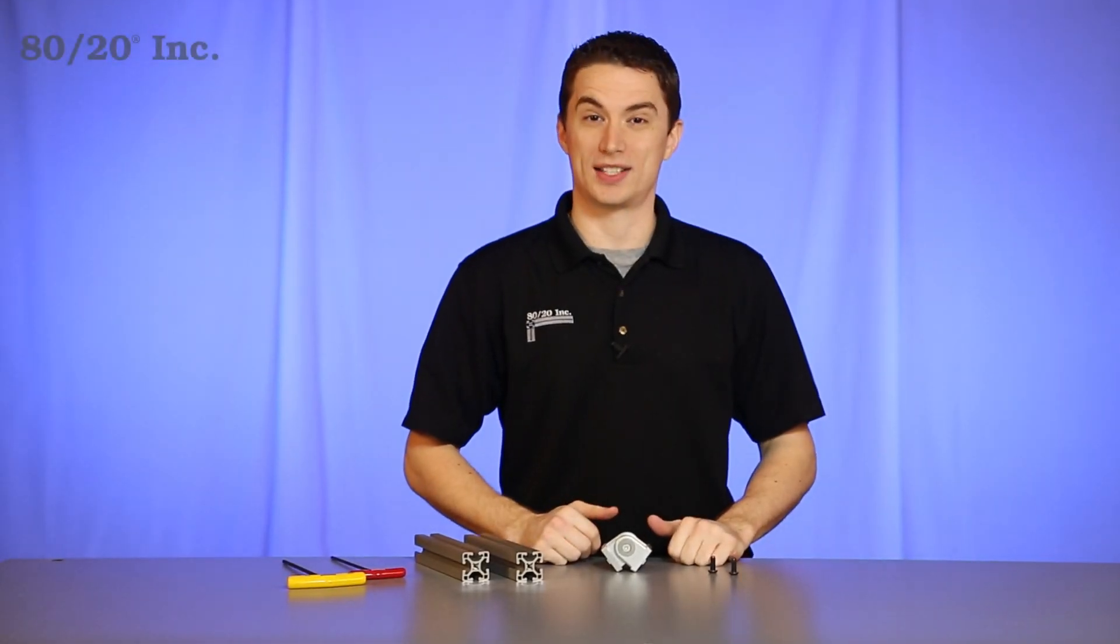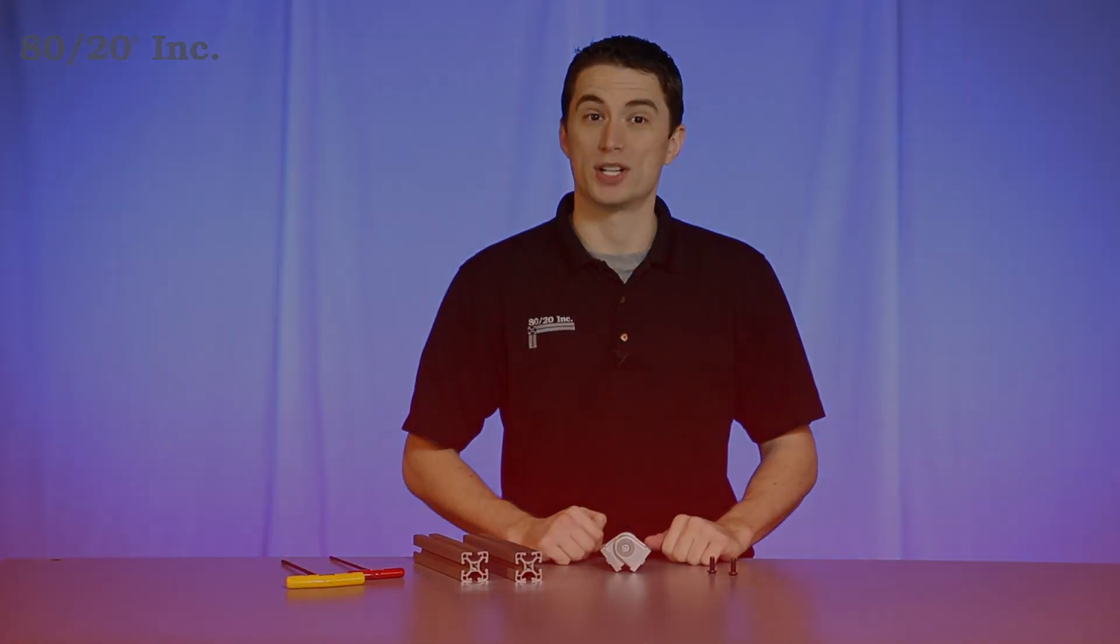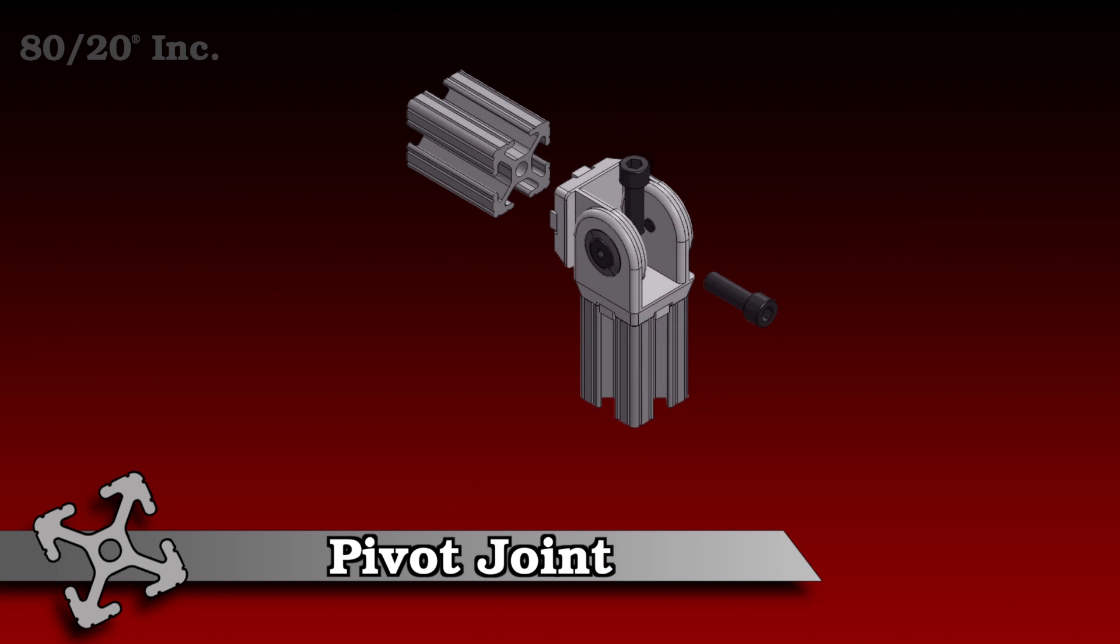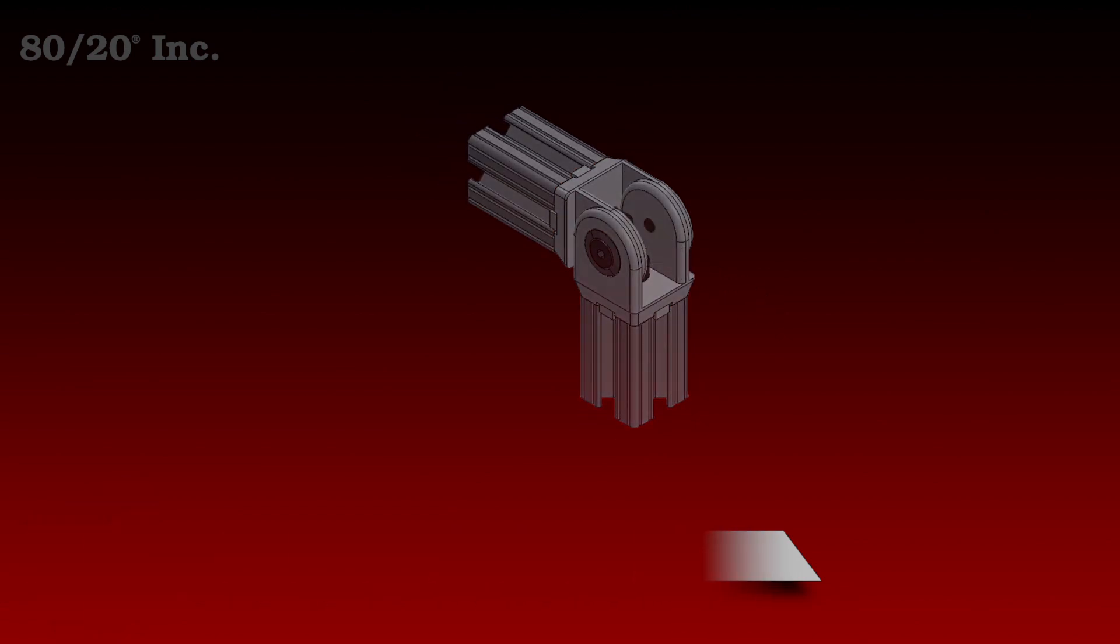Hello and welcome to 8020's product highlight series. Today we're going to take a look at the pivot joint. This connector allows two bars to be positioned at any angle in a 180 degree motion.